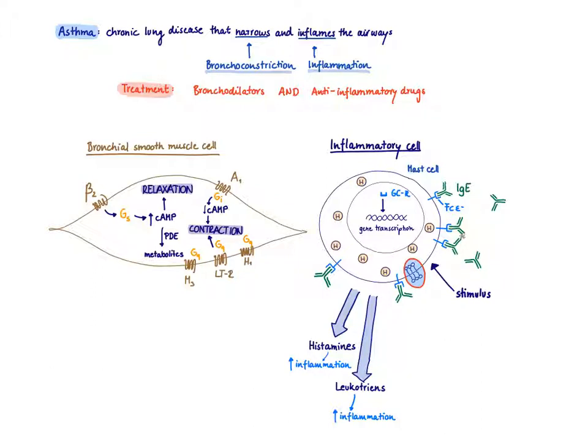Our two target cells are going to be the bronchial smooth muscle cell and an inflammatory cell. I've drawn here as an example the mast cell, but it could be any other inflammatory cell as well. Let's look first at the bronchial smooth muscle cell. There are several G-protein-coupled receptors on the cell that mediate either relaxation or contraction. If you want to use any drugs that help us as bronchodilators, we could either stimulate receptors that mediate relaxation of the bronchial smooth muscle cells or we try to block the contraction of the bronchial smooth muscle cell.